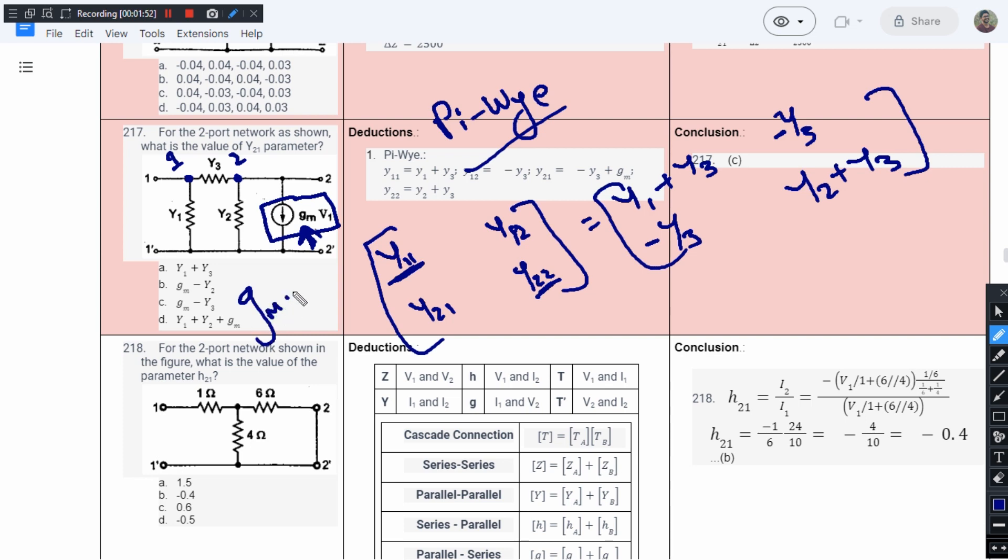The units of this gm is I by V, and here we have got a V. So this V and this V cancel each other, giving us the unit as amperes.